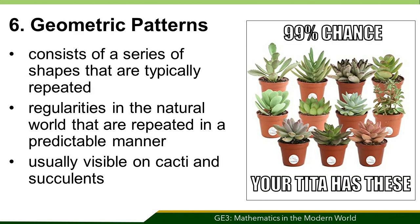The last is geometric patterns. A geometric pattern is a kind of pattern which consists of a series of shapes that are typically repeated. These are regularities in the natural world that are repeated in a predictable manner. Geometrical patterns are usually visible on cacti and succulents.